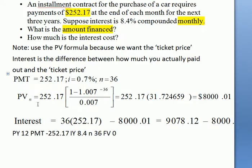We use the present value formula because we want to find out how much was actually financed, so what you bought it for, not how much you're going to actually have to pay. Here's the present value formula: PV equals PMT times [1 minus (1 plus i)^(-n)] divided by i.